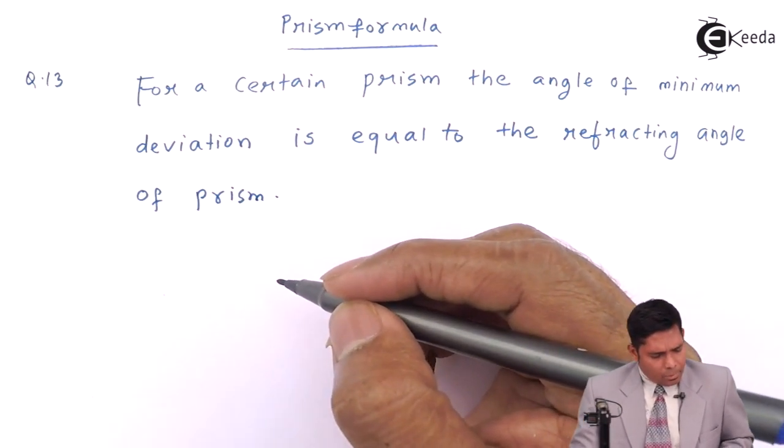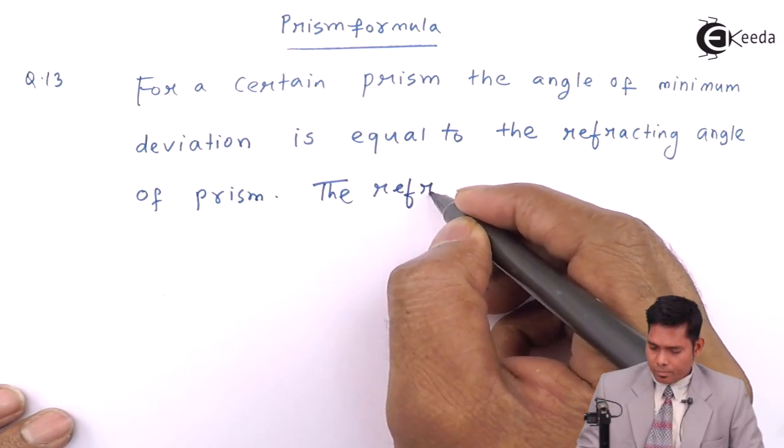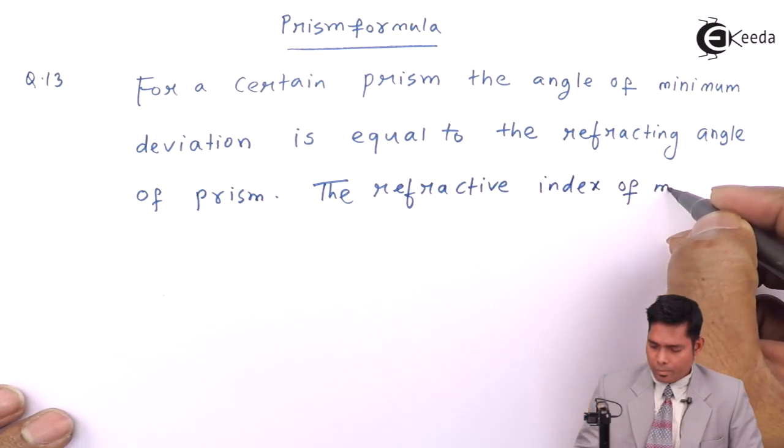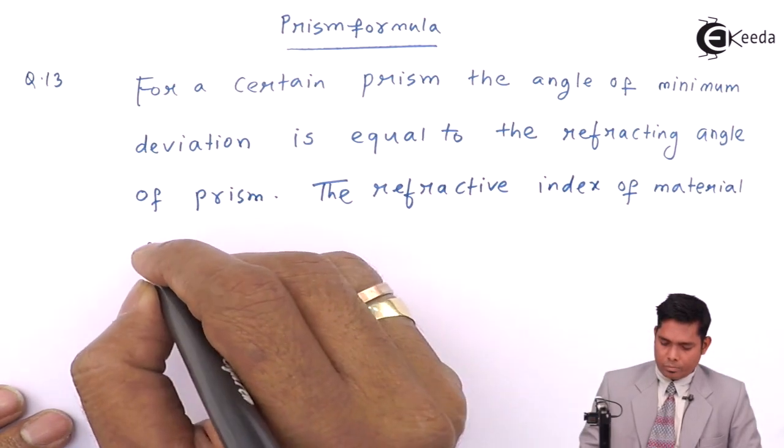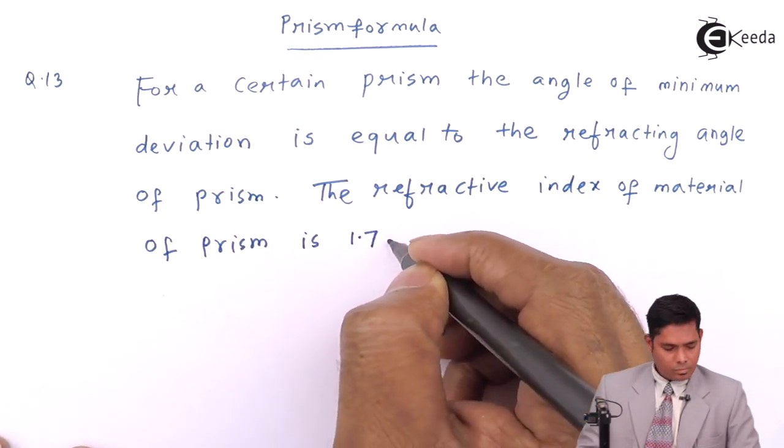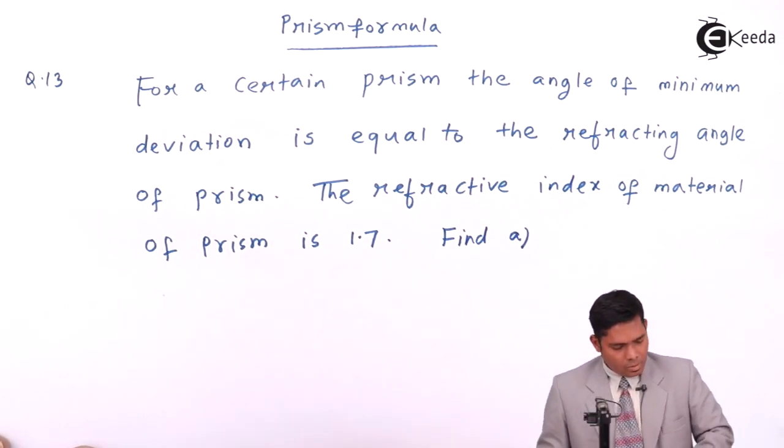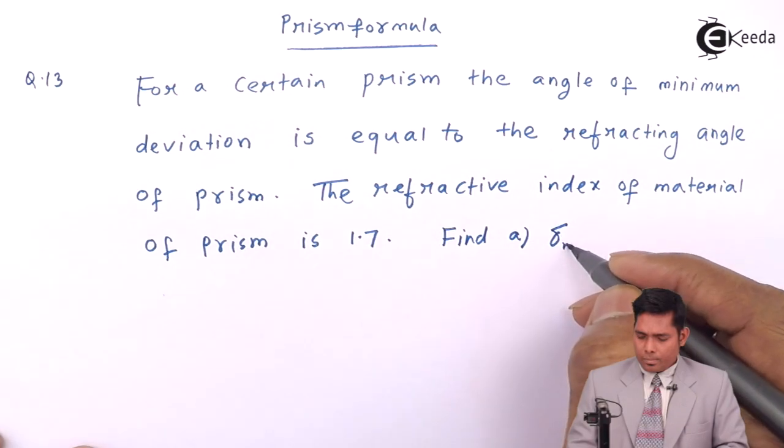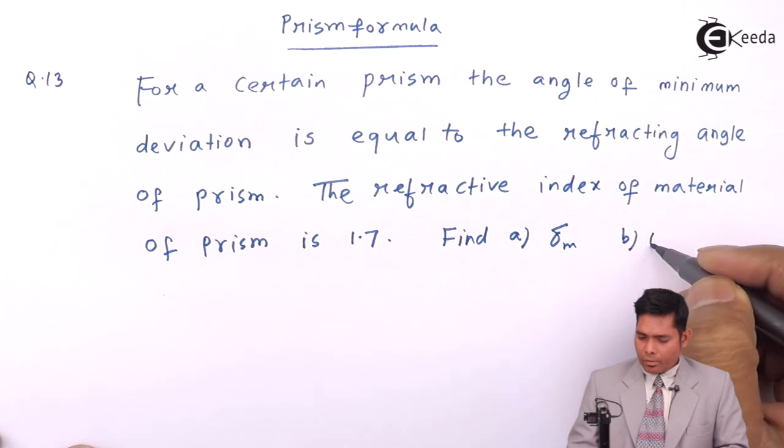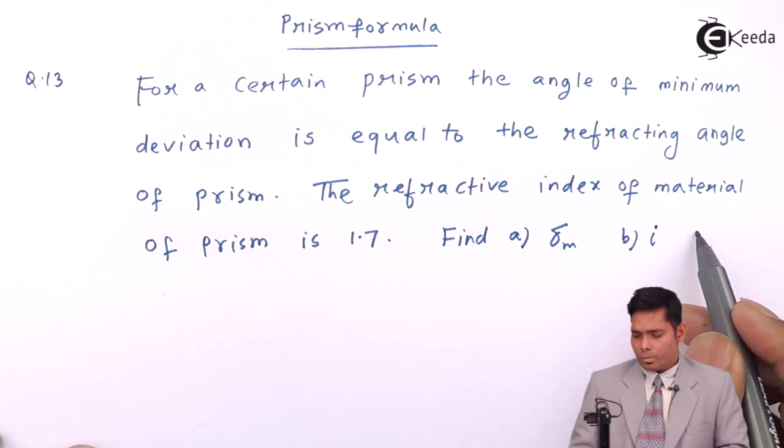The refractive index of the material of the prism is 1.7. Find the angle of minimum deviation, and second, the angle of incidence corresponding to which this minimum deviation takes place.